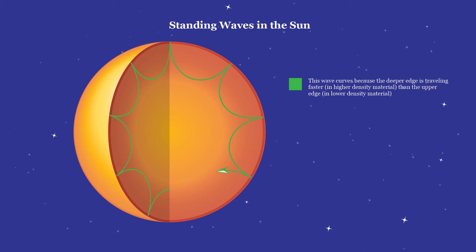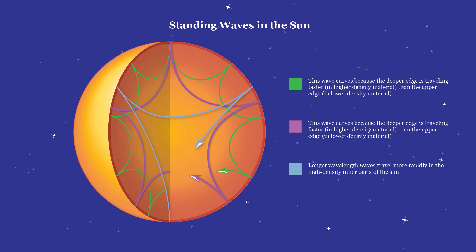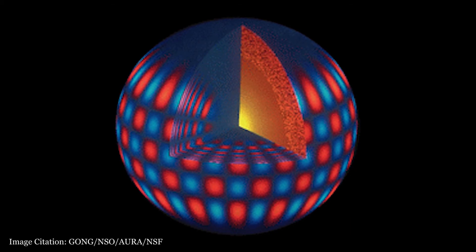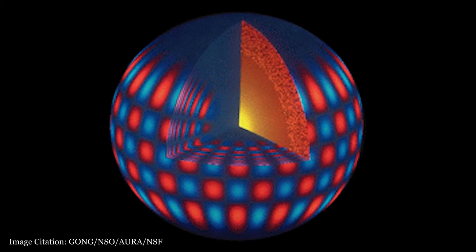The speed and wavelength of a wave depends on the density of the medium through which it travels. Waves in the sun curve due to increasing density in deeper layers, and reflect back off of the surface due to the sudden change in density. Long wavelength standing waves penetrate more deeply into the sun and travel more rapidly, while short wavelength standing waves remain near the surface and travel more slowly. These waves are observed through Doppler shifts of light emitted from the solar surface.